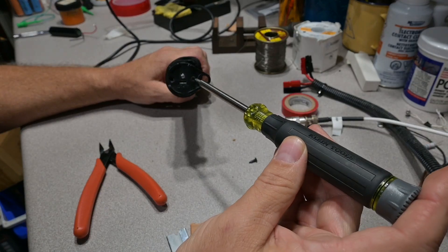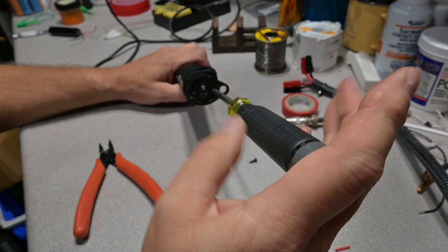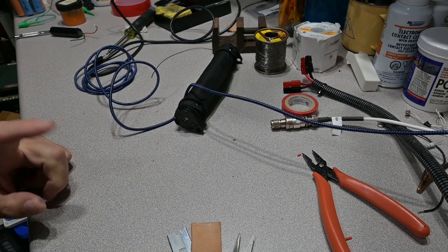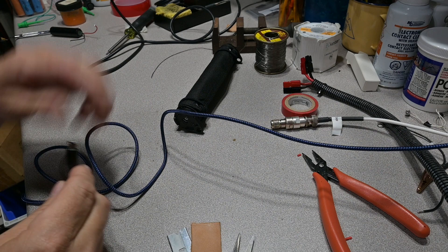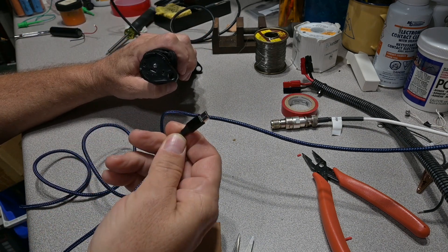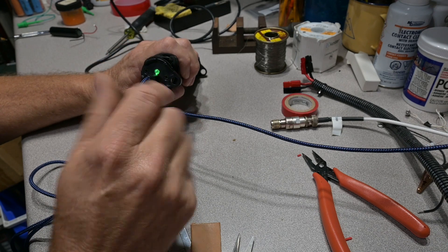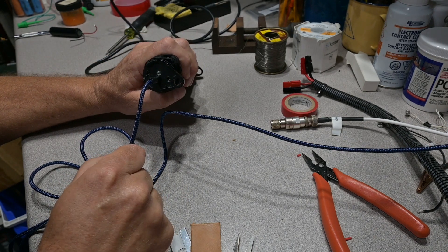Now just reassemble your ends. And remember, snug is tight on these. Let's go ahead and perform test one, which is the built-in charger with the micro USB. Plug it in and looks like we're charging there.